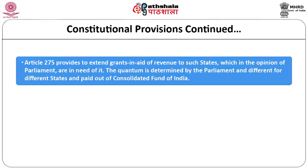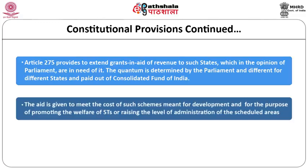Over the years, because of recommendations of many commissions and committees, there has been movement toward more rationalization in extending such grants. Aid is also given under Article 275 to meet the cost of schemes for the development and welfare of scheduled tribes or raising the level of administration in scheduled areas where the scheduled tribe population resides.